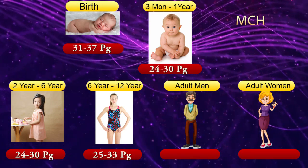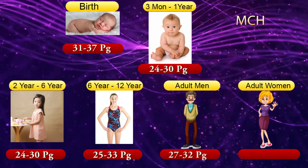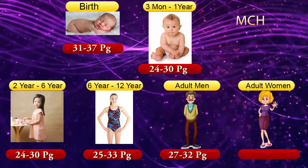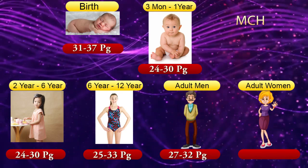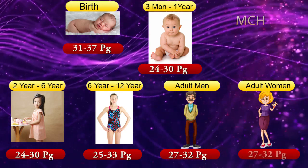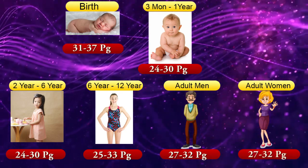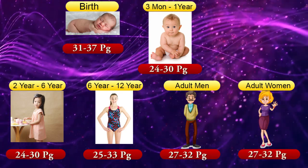Mean corpuscular hemoglobin for adults. Adult men: 27–32 picograms. Adult women: 27–32 picograms.